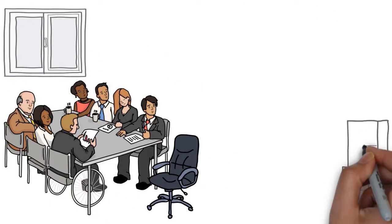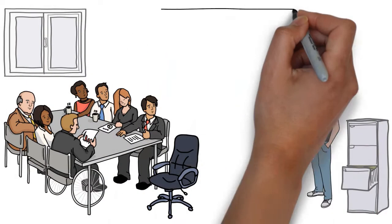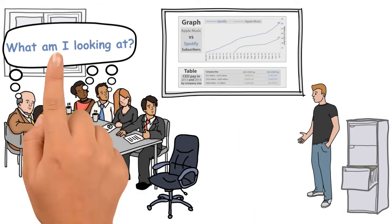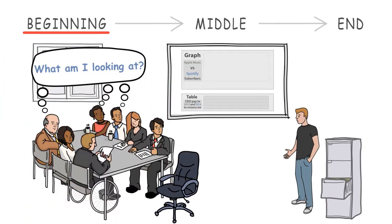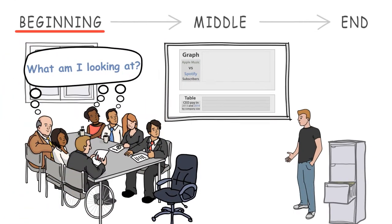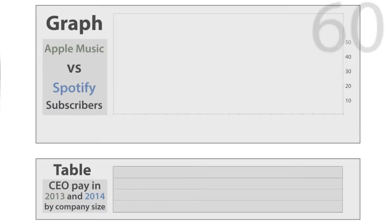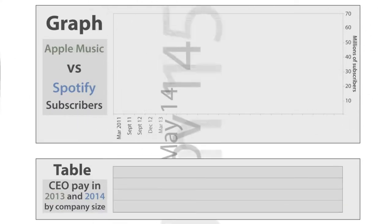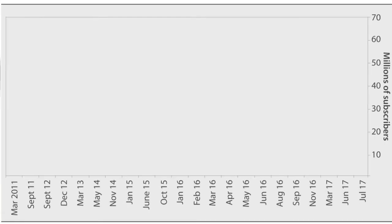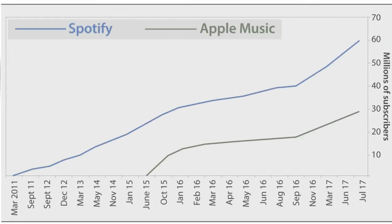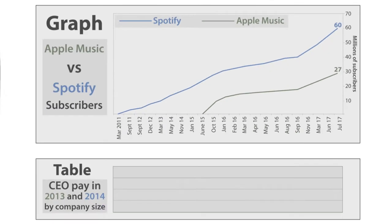When you show your audience a graph or a table, the first question they're going to have is: what am I looking at? So this is where you'll begin — Step 1. Start by explaining the units. If you're presenting a graph, explain the units of the y-axis over the units of the x-axis. For example, this graph represents the number of Apple Music and Spotify subscribers in millions over months.